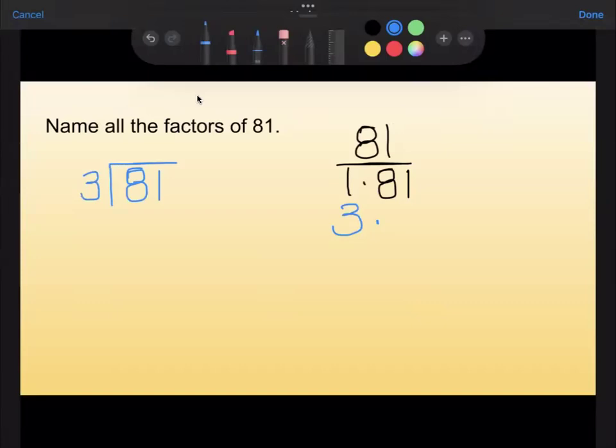Well, 3 fits into 8 twice. So I'll put a 2 up there and a 6 down here. When I subtract it, I get 2 left over. I'll bring down that 1 and 3 fits into 21 seven times. I'd have no remainder because 7 times 3 is 21. When you subtract those, you get 0. So that tells me that 3 times 27 is our two factors of 81.